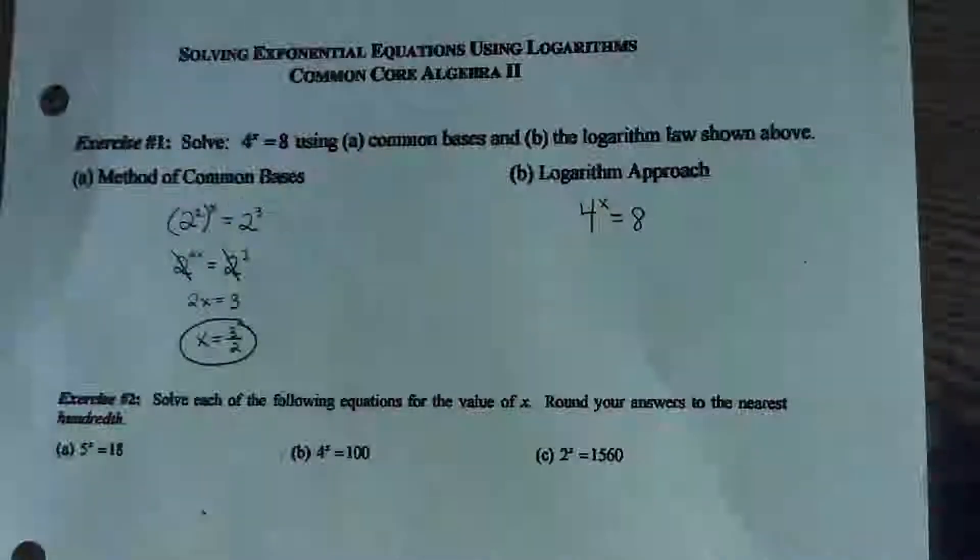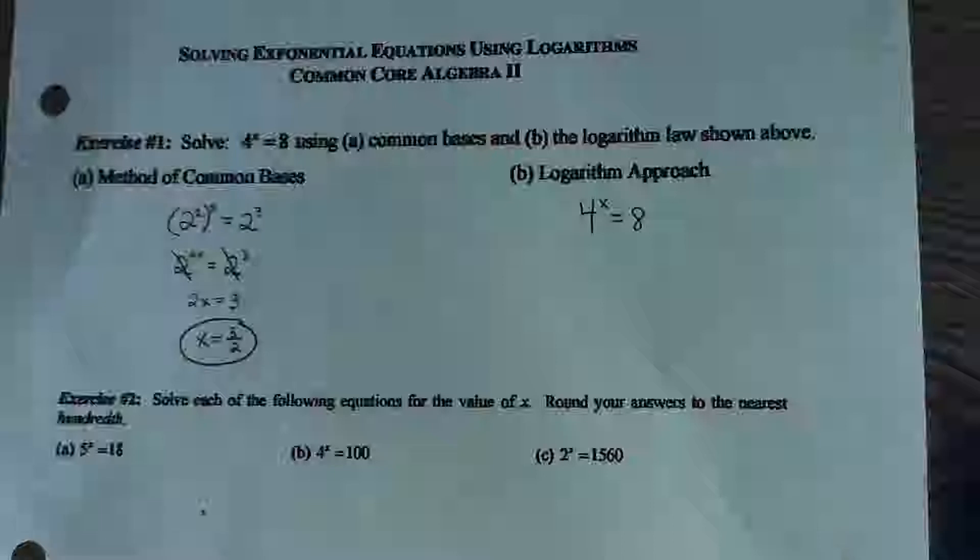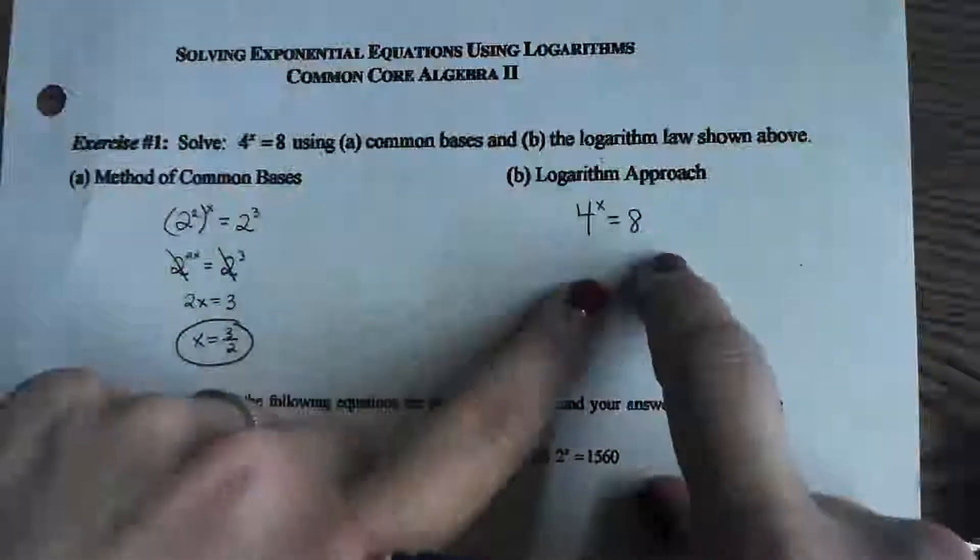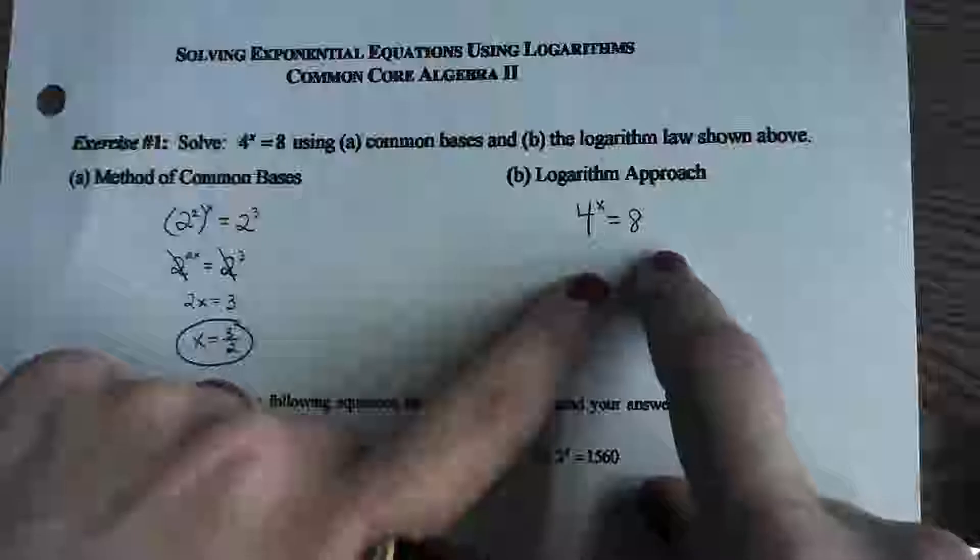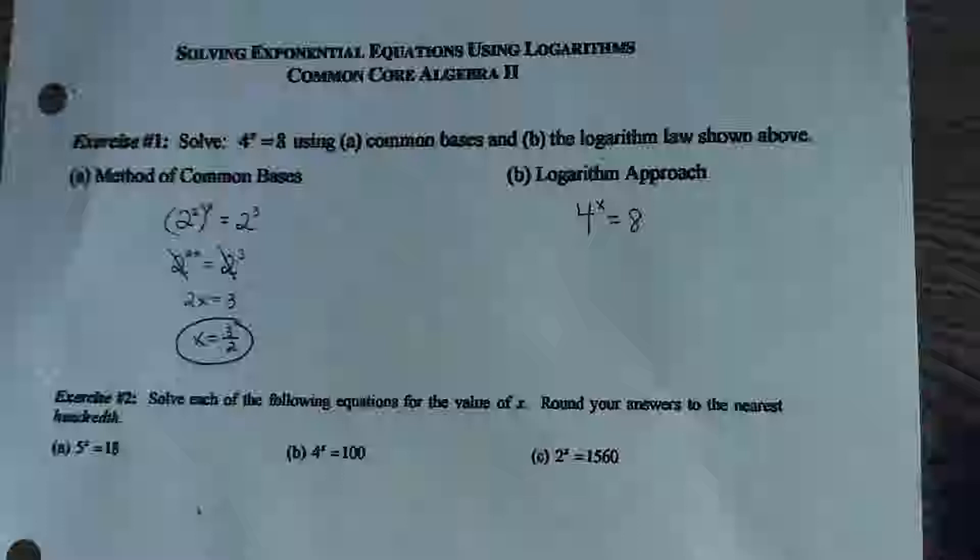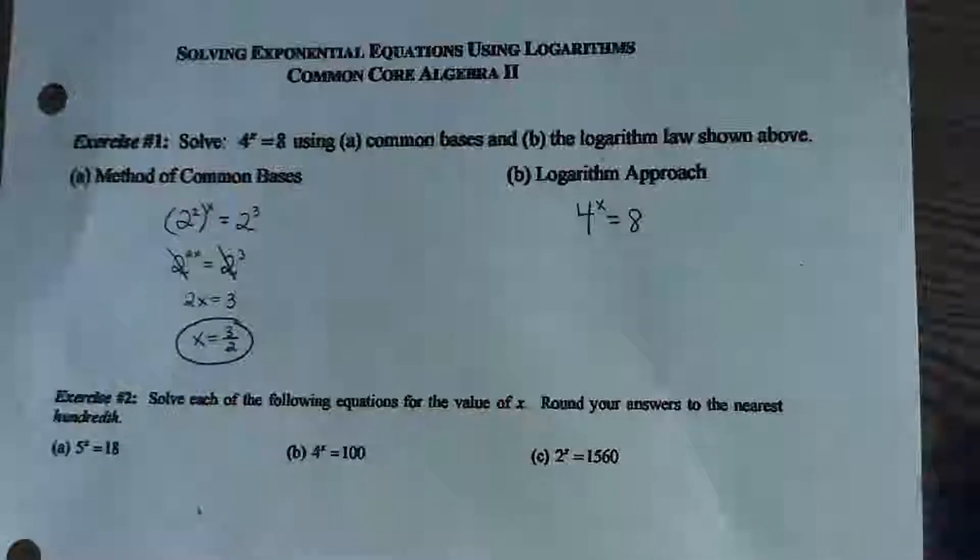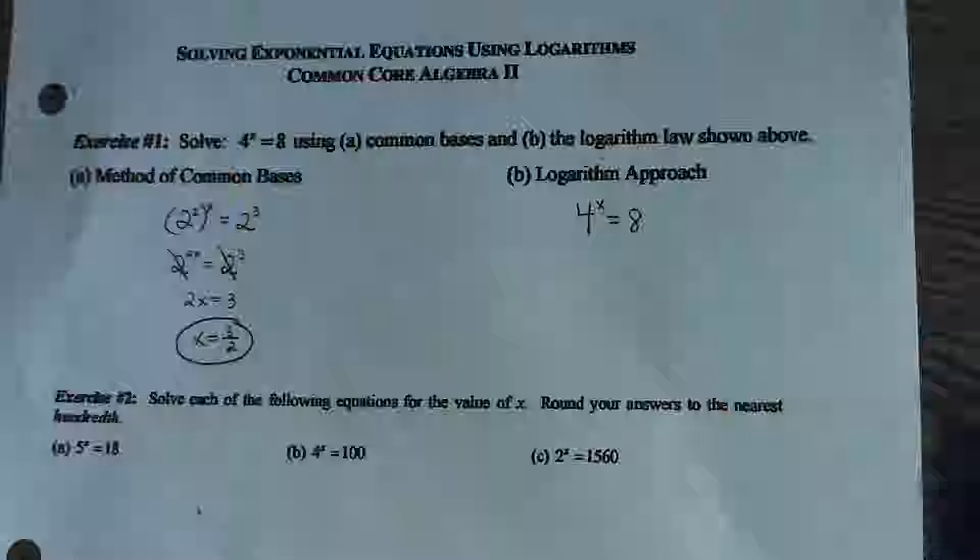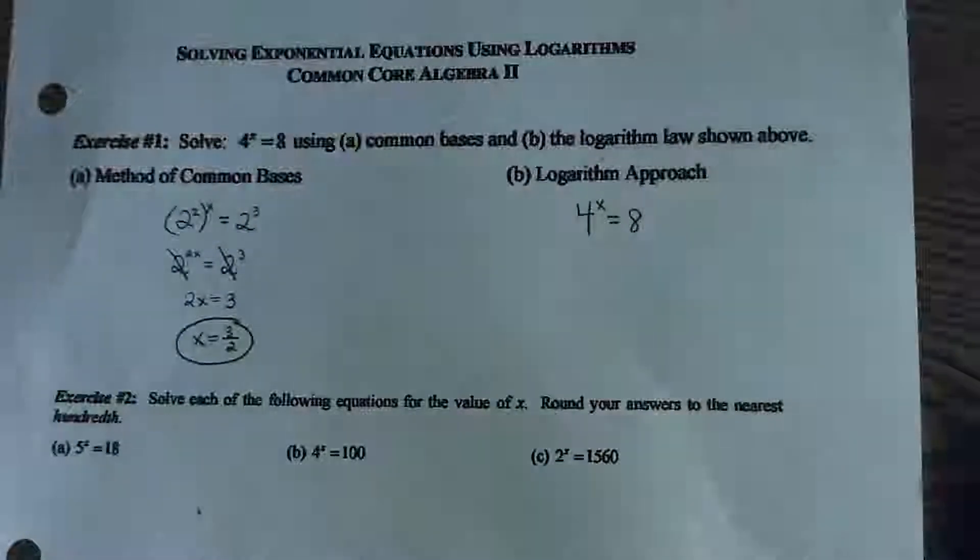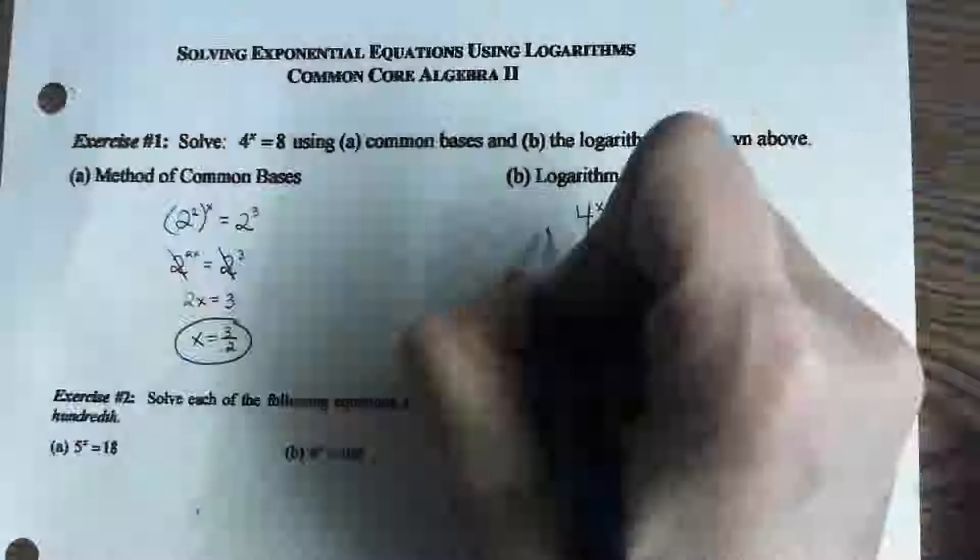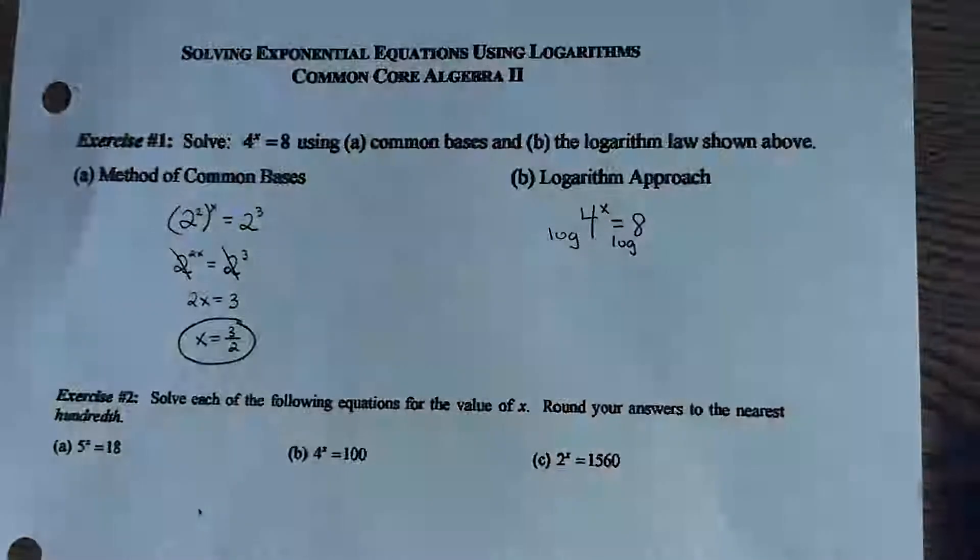So here's how the log approach works. Yesterday, when we had logs on both sides, we could just cross them out, right? Are you with me? Likewise, we can actually just add them in. I can take the log of both sides. If two sides are equal, and I take the log of the left side, and I take the log of the right side, they'll still be equal. So I'm just going to take the log of both sides.